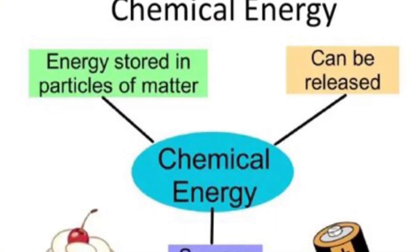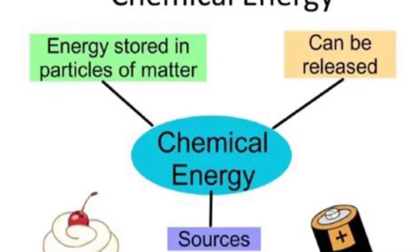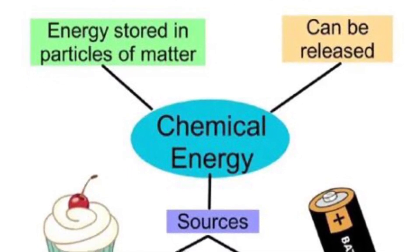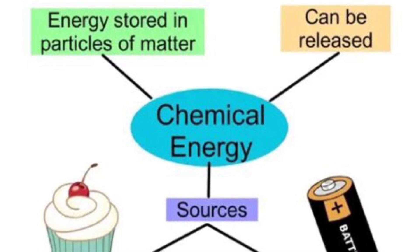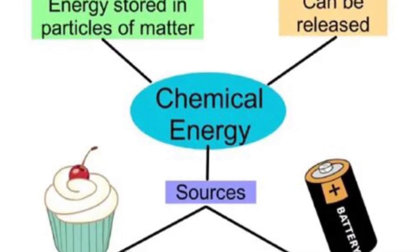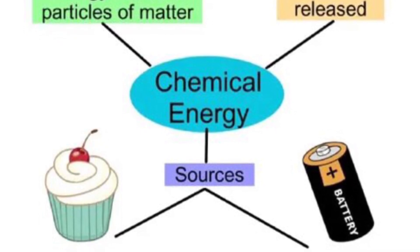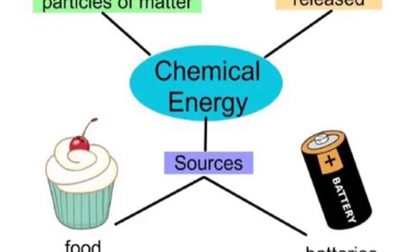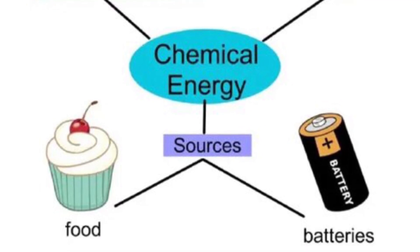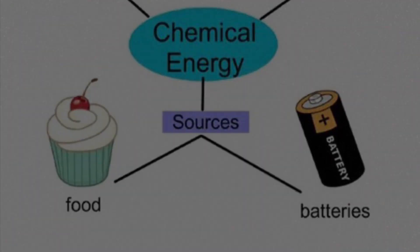What is chemical energy exactly? Chemical energy is energy that is stored. Some examples of chemical energy are food, because food has energy in it, and when we eat it and go through the digestive system it gives us energy to run, jump, and whatever we want. Chemical energy is the most widely used type of energy in the world, as it is very important to humans.